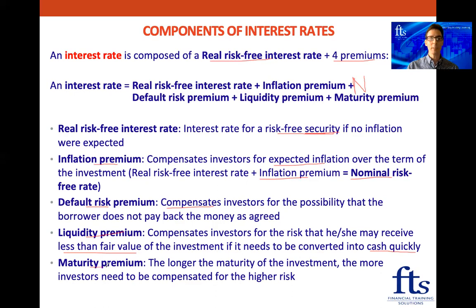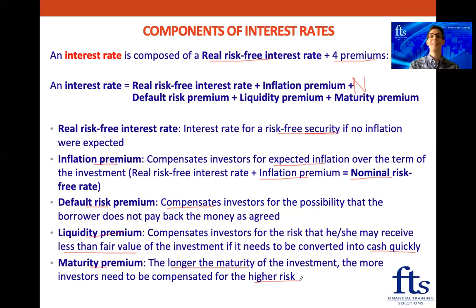Lastly, we have the maturity premium. The rule is that the longer the maturity of the investment, the more investors need to be compensated for the higher risk. If we as investors lend money to a company for a short period like one year, and the company is strong now, then in one year's time everything should still be okay. But if we start looking five years or ten years down the line, there's going to be a lot of uncertainty. So the general rule then is that the longer the maturity of the investment is, the more we need to be compensated, because there is higher risk.